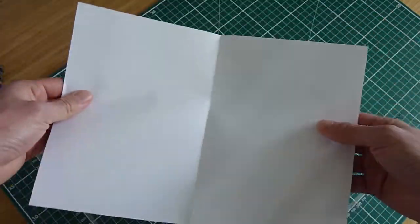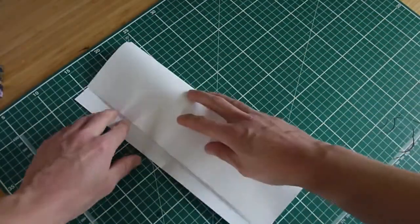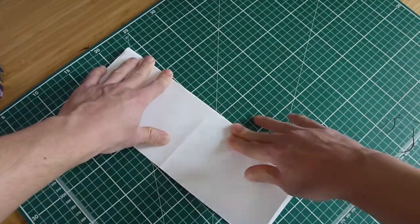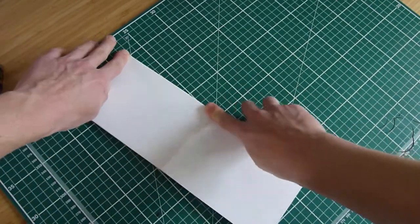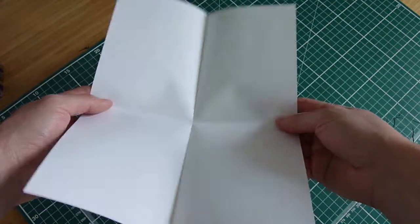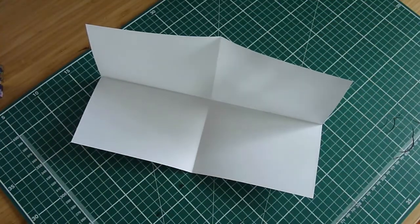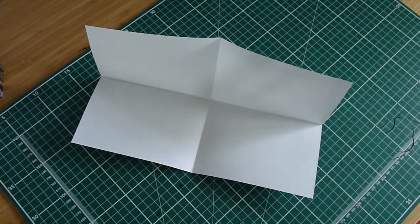Secondly, you're going to want to unfold that again, and then taking it from a different axis, you're going to fold it lengthways in half. So again, just folding it in half but lengthways. This is called the hot dog fold, and yeah, it's about as delicious as it sounds.